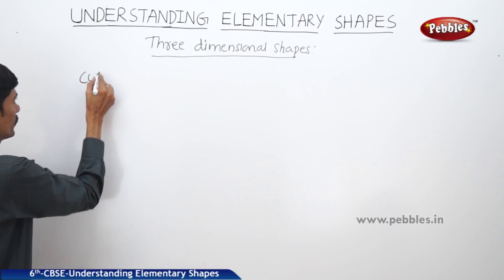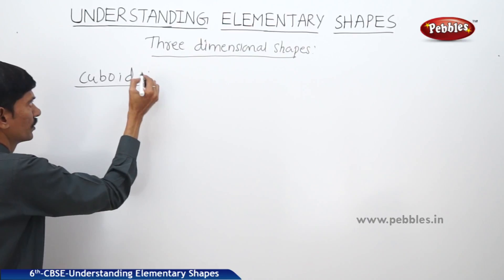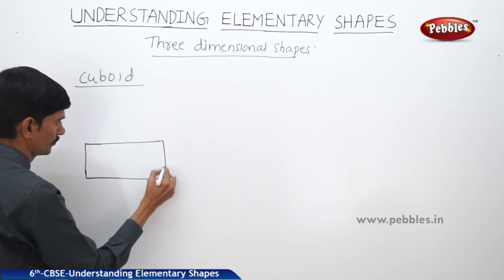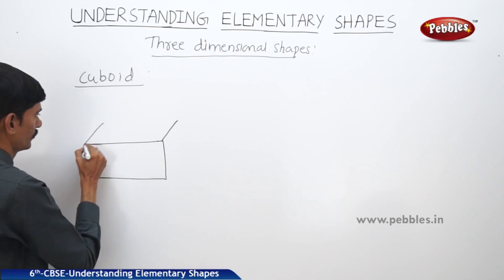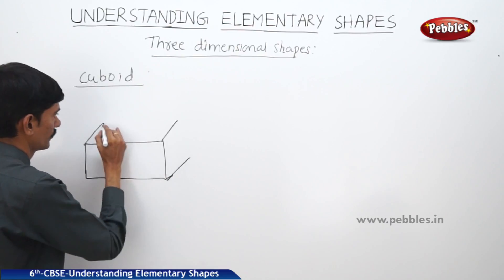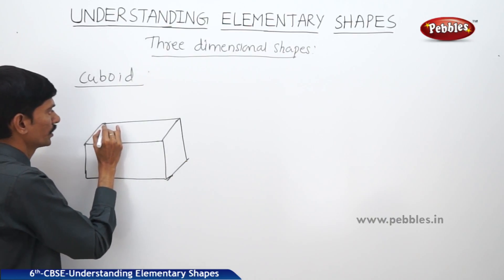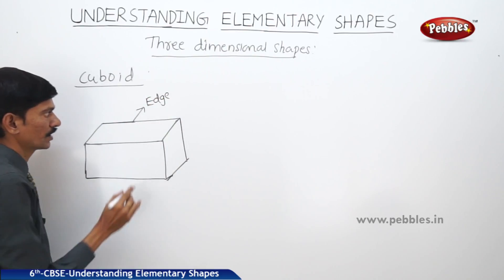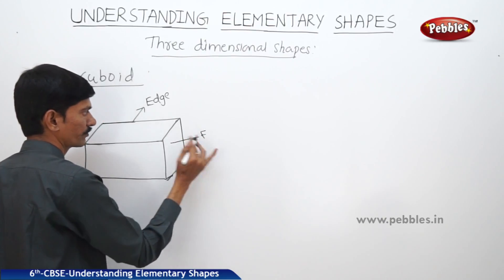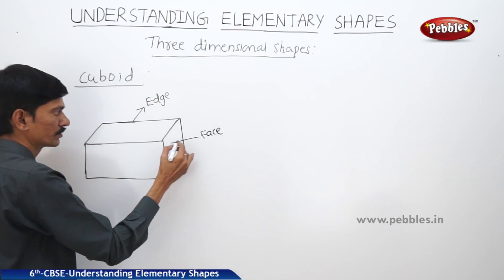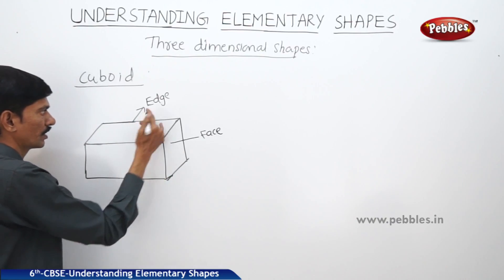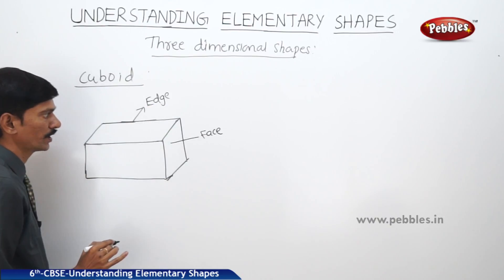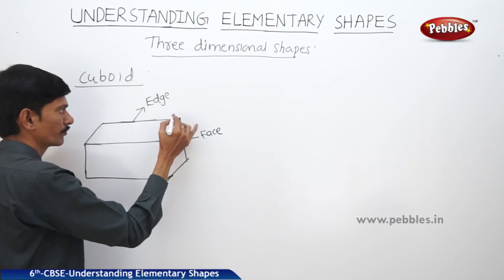Now let us observe a cuboid. A cuboid has length, breadth, and height, and they are all different. The flat surface is called its face. The line where two faces meet each other is called an edge. And the point where edges meet is called a vertex.